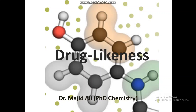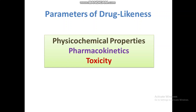Today we will discuss what is drug likeness in our drug design and discovery process. We need different properties of compounds which tell us whether our compound is drug-like or not. The parameters of drug likeness include physico-chemical properties, pharmacokinetic properties, and toxicity. With the help of these three parameters, we can determine whether our compound is drug-like.